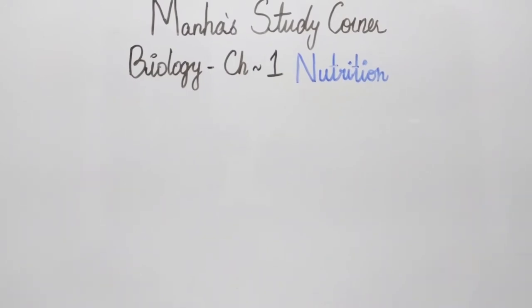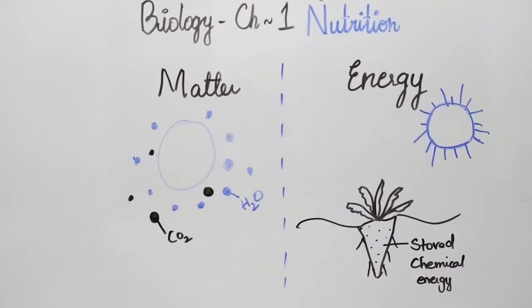How this process works can be understood in two perspectives: one is matter and the other is energy. In terms of matter, photosynthesis takes place in smaller, simpler material and assembles them into larger, more complex ones. In terms of energy, photosynthesis transforms the light energy of the sun into a form living things can access: the stored chemical energy in food molecules.